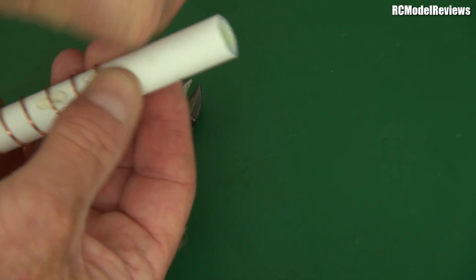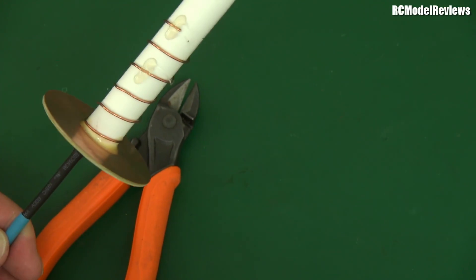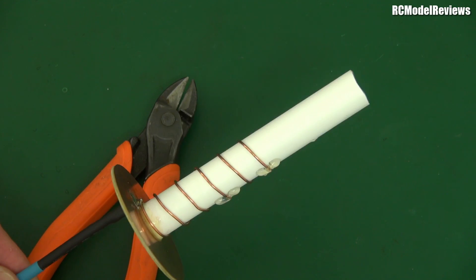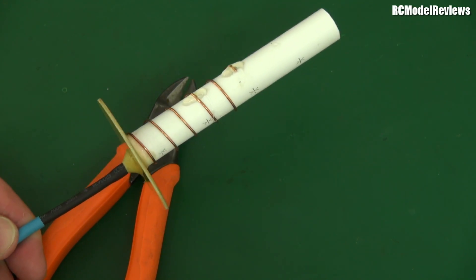Here we go, we just unwind the bit we're not using. This hot glue sticks real well actually, it's great stuff. There we go, so now we have made ourselves a five and a bit turn helical.